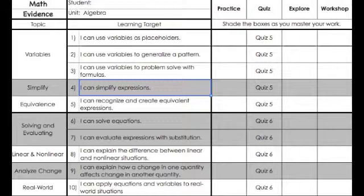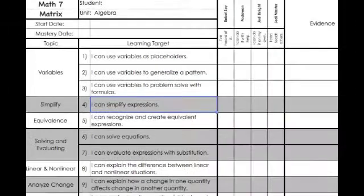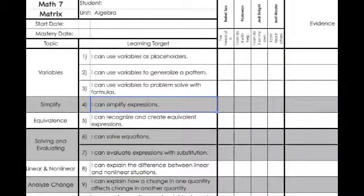This other page is where the students are evaluating themselves. The check marks were their initial self-assessment of their understanding, and then that person chose to use a scribble to represent where they were at the end of the unit.